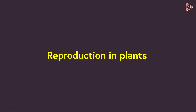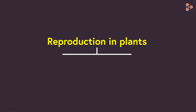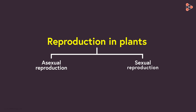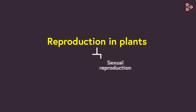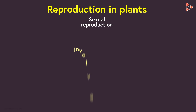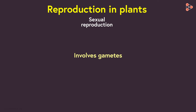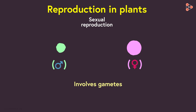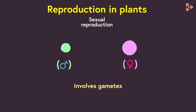Reproduction in plants can occur in two major ways. One type is asexual reproduction and the second is sexual reproduction. Sexual reproduction, as the name suggests, involves sex cells or gametes. So a new individual is born when gametes from both male and female parents fuse.